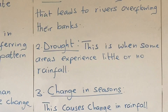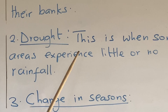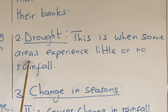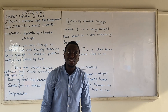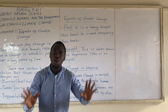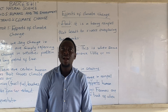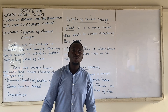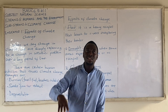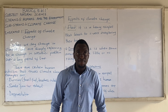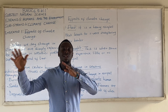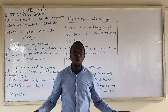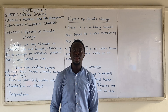Two, we have drought. This is when some areas experience little or no rainfall. Due to climate change, there are certain areas that do not experience rainfall at all. How can we farm there? How can plants grow there? And how will humans and animals living there get water to drink? Due to climate change, there is drought in some places, with little or no rainfall within the year.